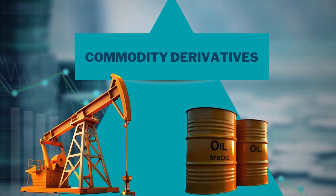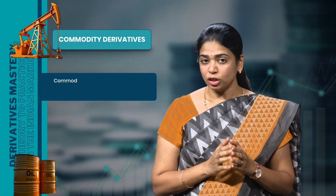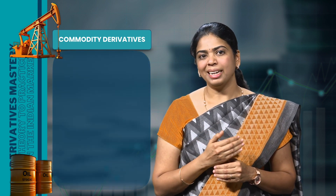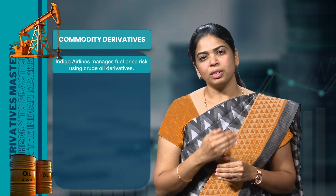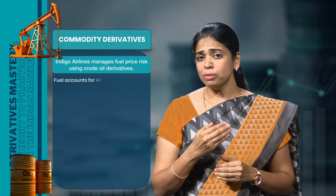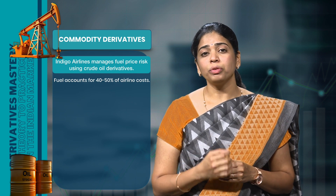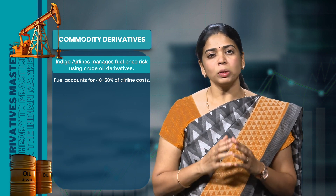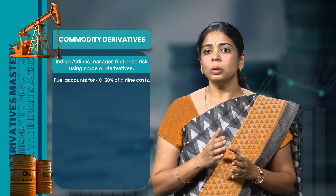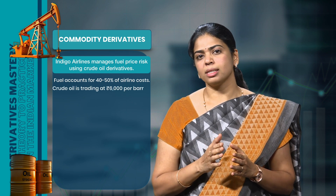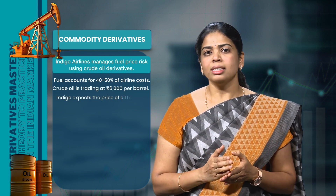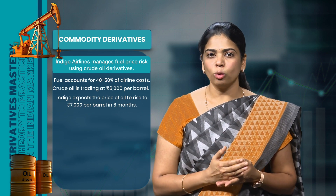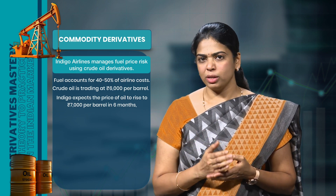Now let's move on to commodity derivatives. Commodity derivatives are financial contracts that derive their value from the price of a physical commodity. Imagine an Indian airline company like Indigo wants to manage the risk of rising fuel prices. Fuel, which comes from crude oil, makes up about 40-50% of the airline's operating cost, so changes in oil prices can have a huge impact on the company's profits. Let us say crude oil is currently trading at Rs.6000 per barrel. Indigo Airlines is worried that in 6 months oil prices might increase due to factors such as reduced global supply and production cuts by major oil producing countries.